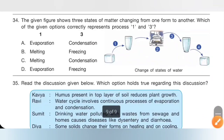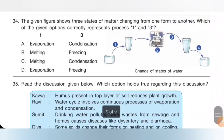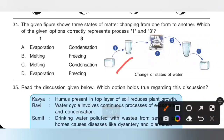Question 34: The given figure shows 3 states of matter changing from one form to another. Which option correctly represents processes 1 and 3? In process 1, solid form of water changes into liquid form — that is melting. In process 3, gaseous form of water changes into liquid form — that is condensation. Option C, melting and condensation, is the correct answer.